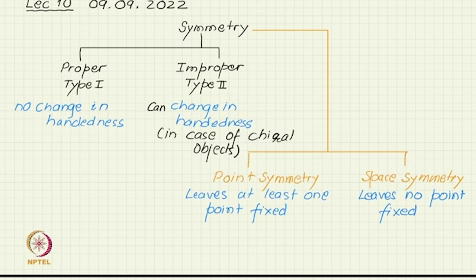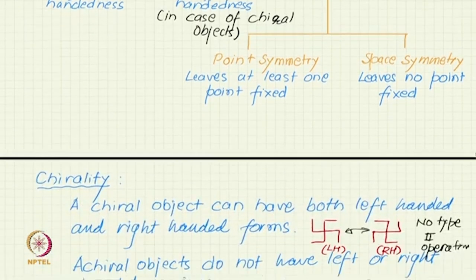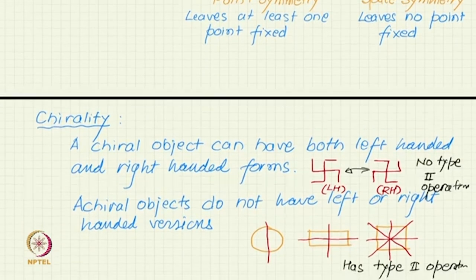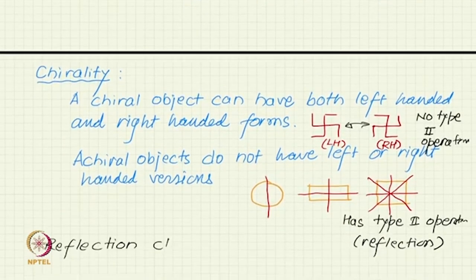The earlier claim that an improper operation will always change handedness was not perfectly right, because it cannot change the handedness of an achiral object — since an achiral object does not have handedness. So how can you change it?